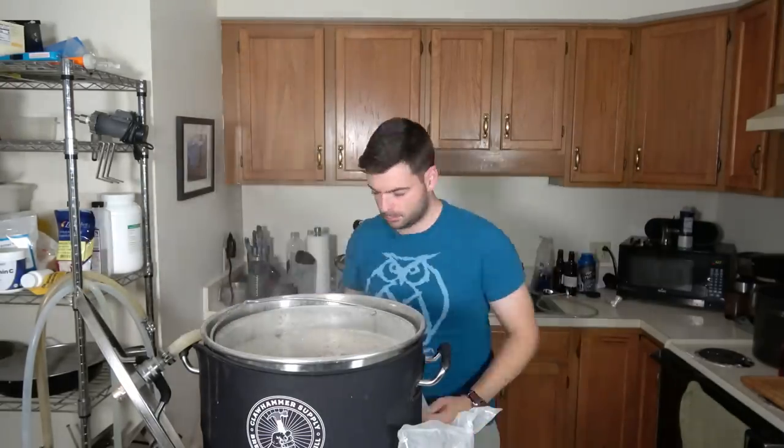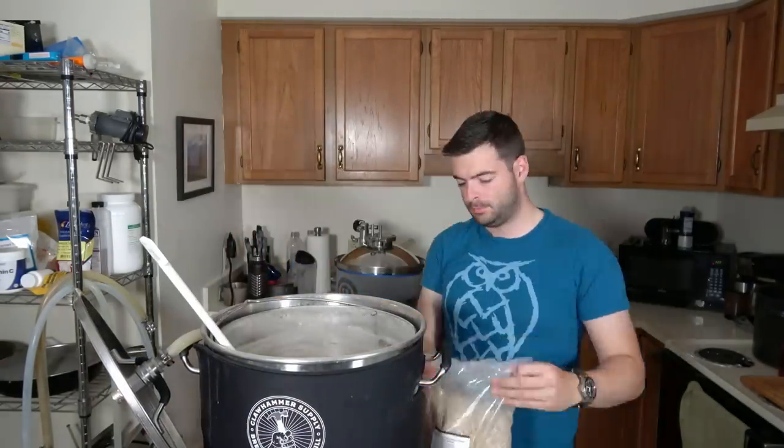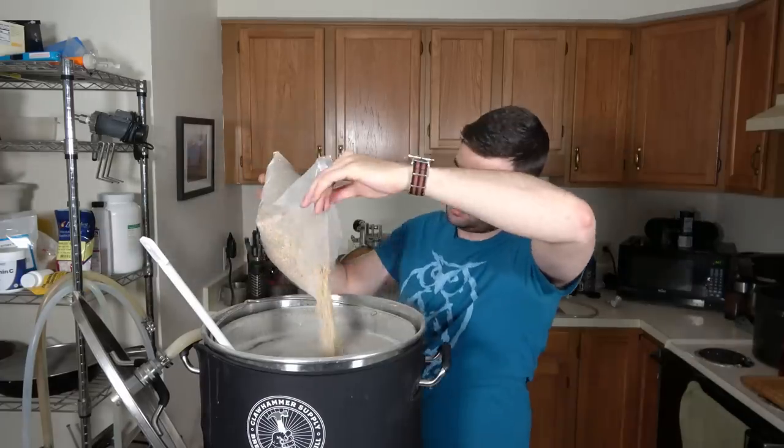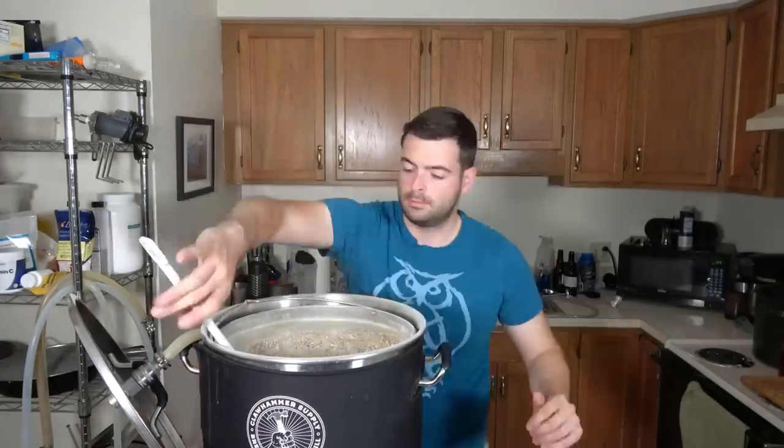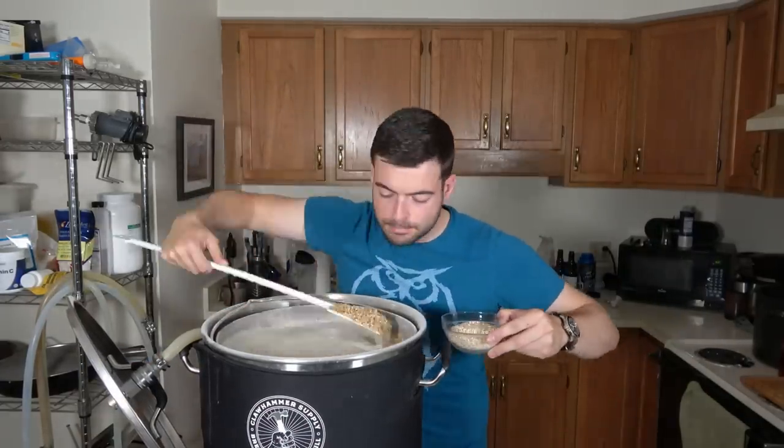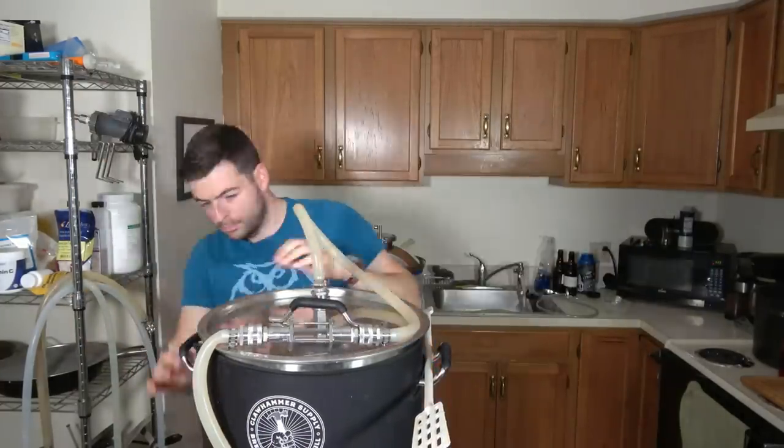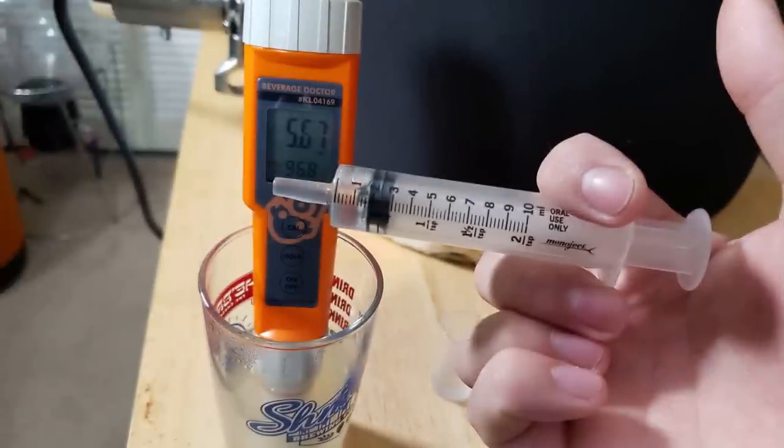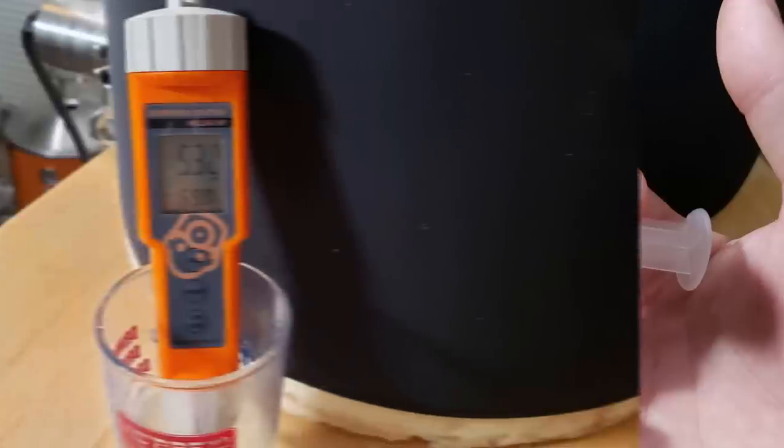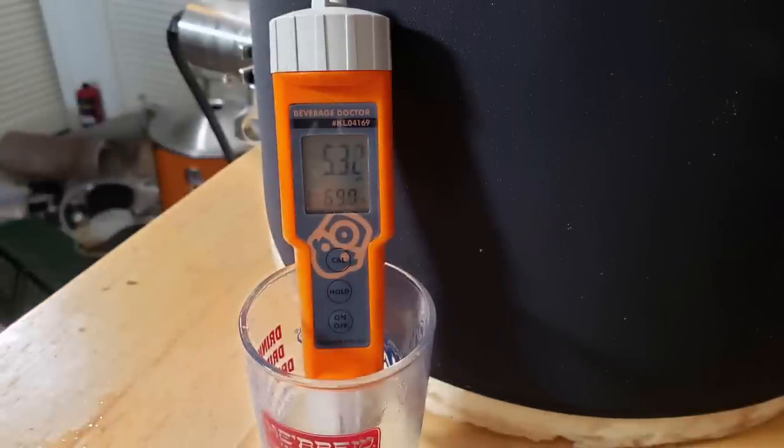Once the strike water in my Clawhammer Supply 120 volt system reached my mash-in temperature, I mashed in with a grain bill, being sure to break up any clumps in the mash. Next, I started recirculating. I let the mash sit for about 10 minutes, recirculating, and then I took a pH measurement, and I saw a measurement of 5.67, which was still far too high despite my addition of acidulated malt. So to correct this, I added about 3 milliliters of lactic acid, and this brought the mash pH back down to where it should be, around 5.3.